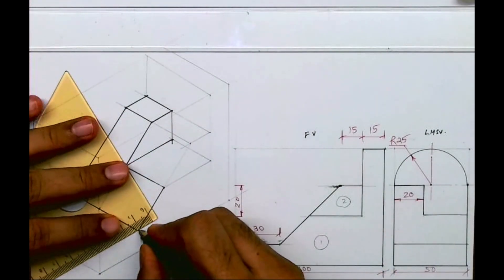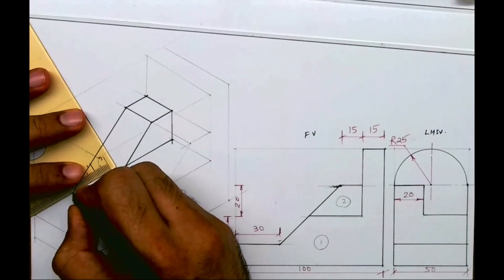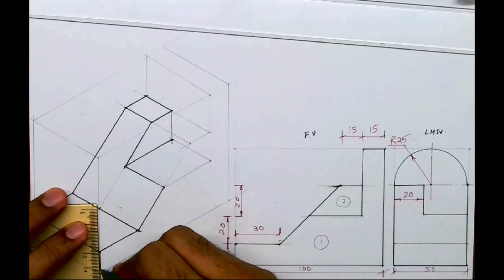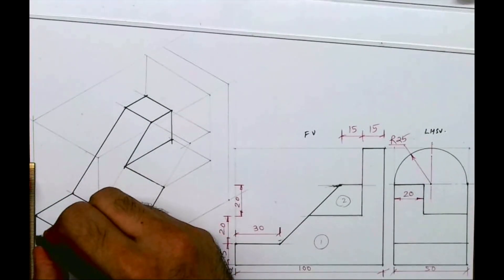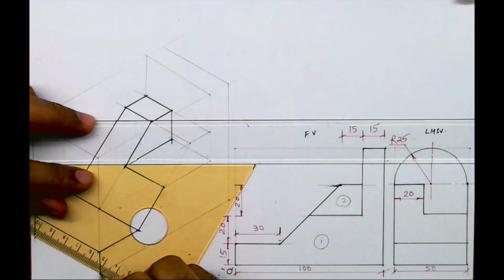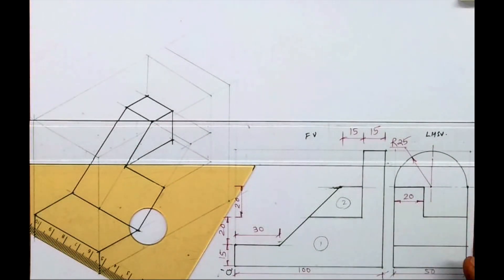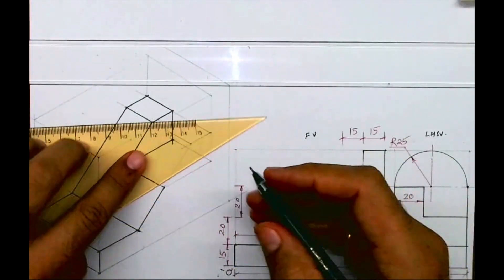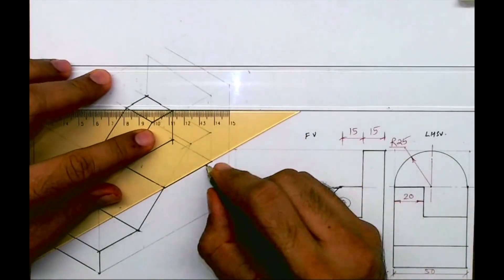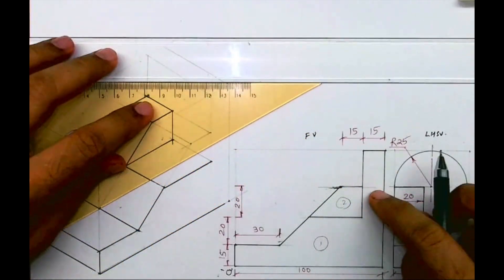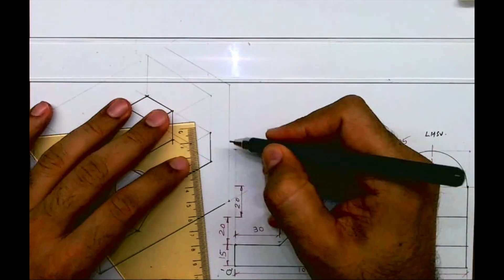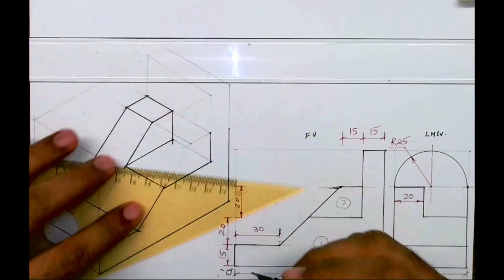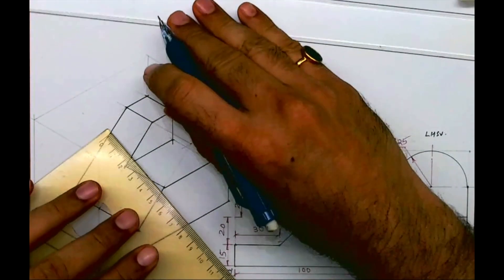Now after that we'll draw the lower part which is dark. This part is also dark. This part is also dark. This part is also dark. This part is dark. Now we need to draw circle.